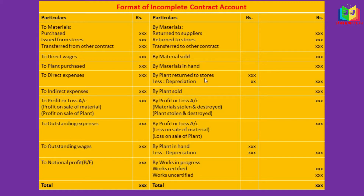Plant return to stores — for that, depreciation has to be calculated till the date of return. Next, plant sold. If there is any sale of plant, that will come in the credit side. Loss on material stolen or destroyed, plant stolen and destroyed will appear here, and loss on sale of material or loss on sale of plant will also be credited in the contract account.